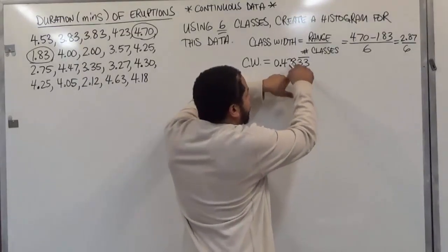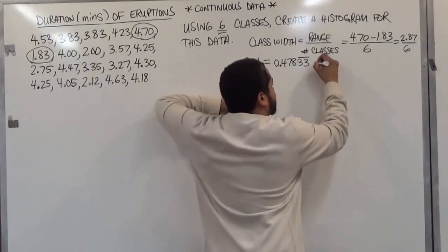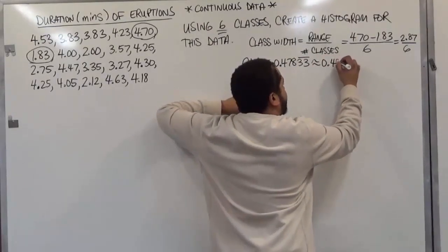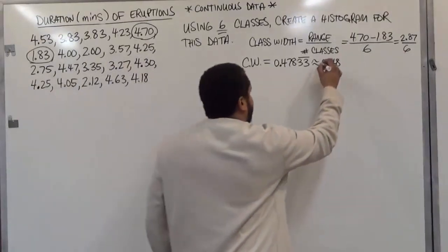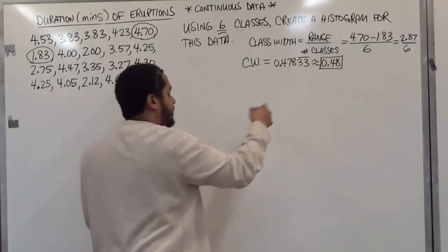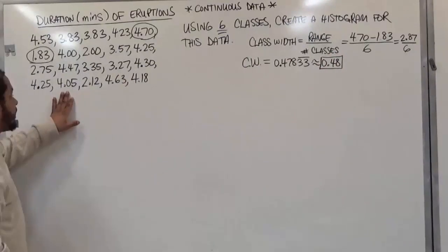So I'm going to use this 8 to round up that 7 which is going to give us the number 0.48. Now it's practical to do this again because we have to identify our class width by rounding up to the next digit of what we have here.